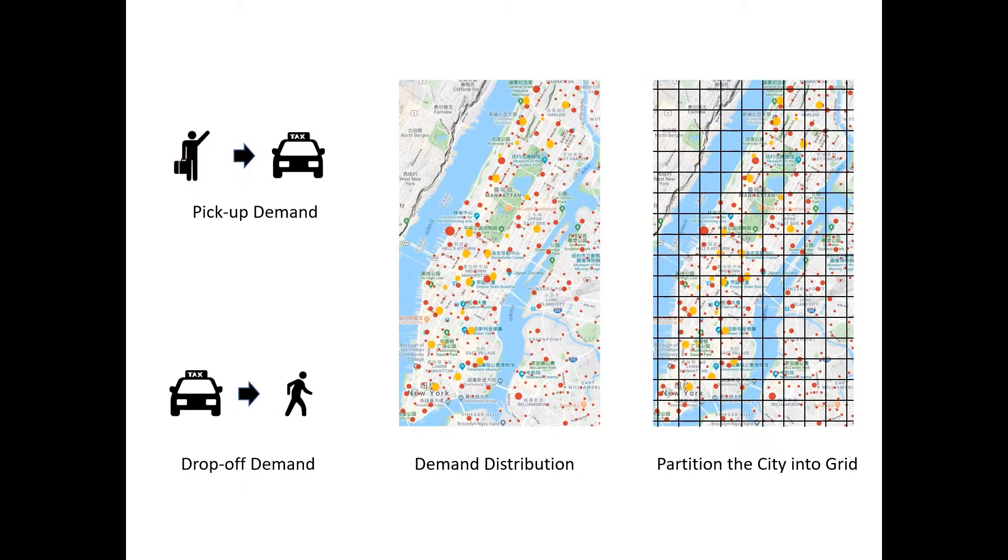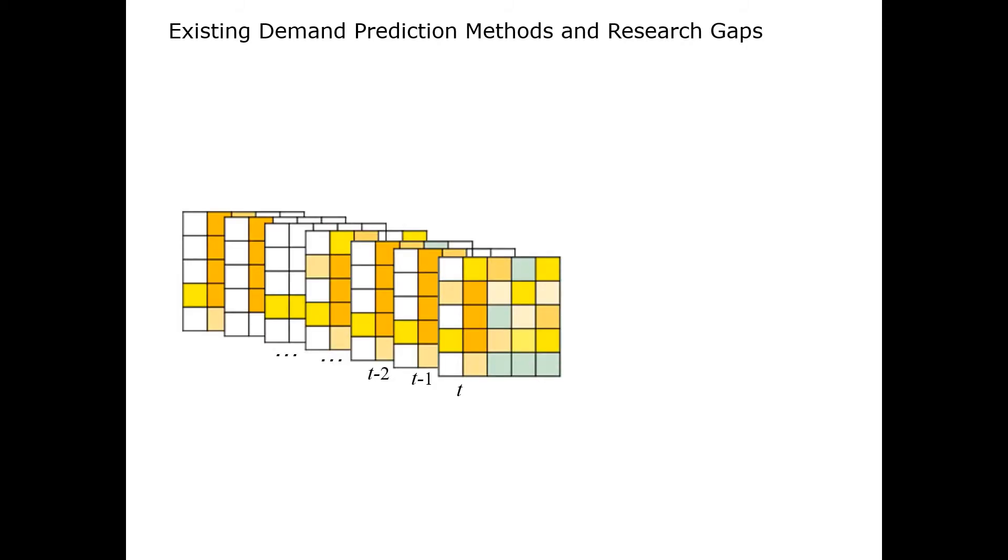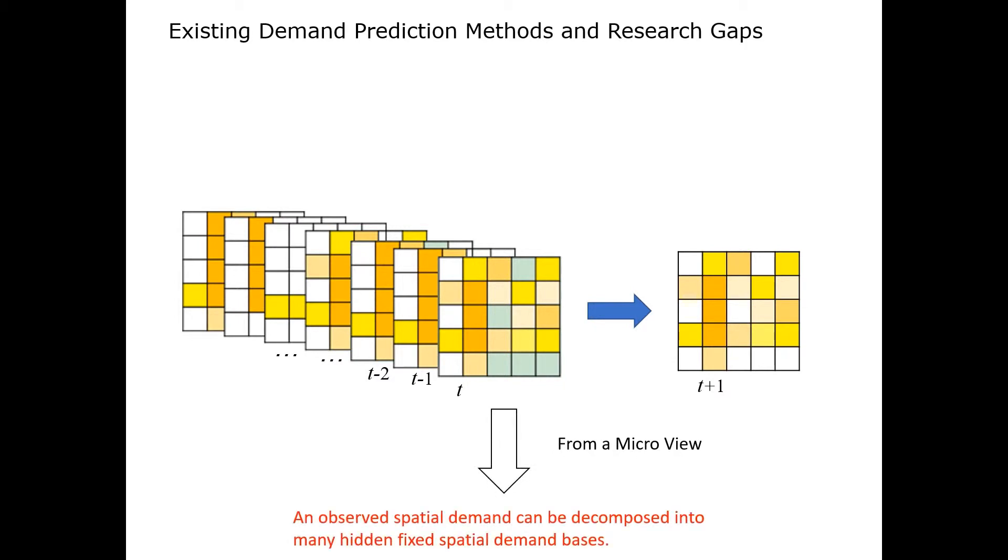In fact, there has been a lot of research working on this problem. The existing method view it as time series prediction question. However, they have already ignored some important hidden correlations. To fill this research gap, we intend to extract hidden pattern of single transport and capture the correlation between different transport.